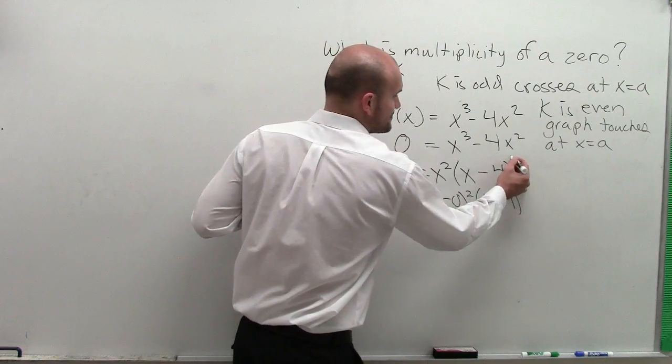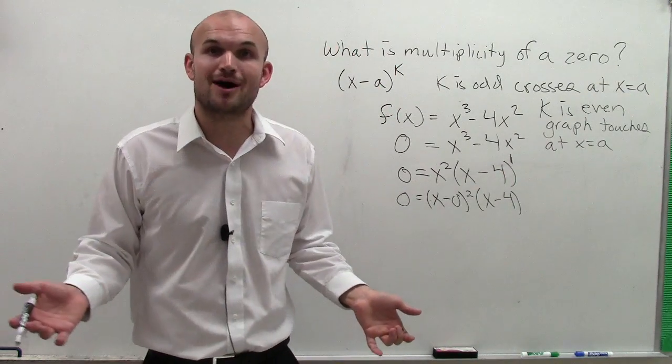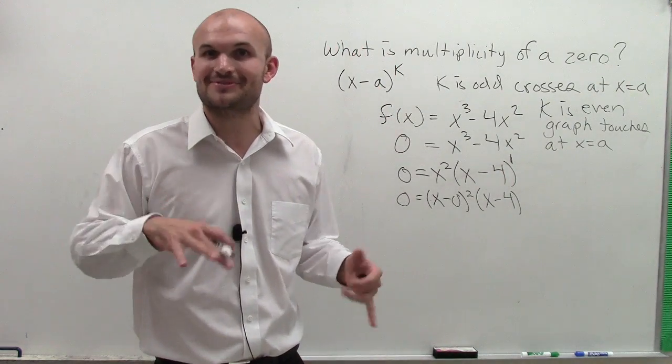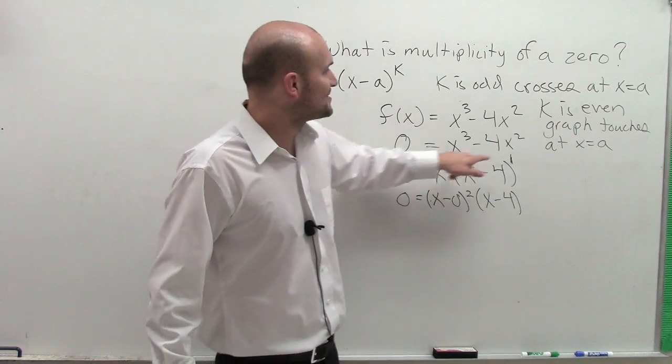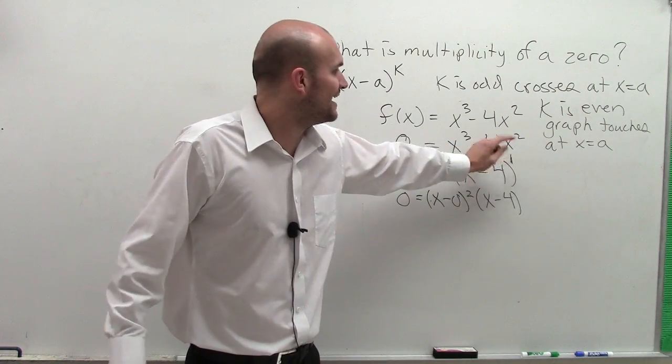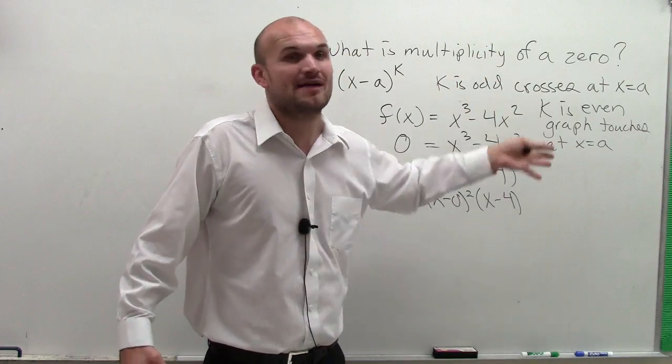And here with (x - 4), when there's no exponent, we know we can always raise it to the power of 1, so (x - 4)¹. Since this exponent is odd, that means the graph is going to cross at x = 4.